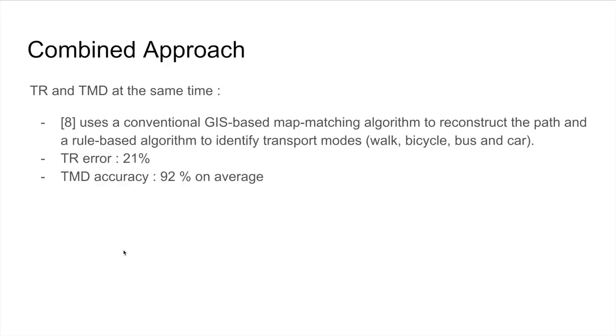Finally, we've seen in the literature one other approach that actually tried to tackle both problems as we are. They use a conventional GIS-based map matching algorithm to reconstruct the path and a rule-based algorithm to identify transport modes—walk, bicycle, bus, and car. They obtained a trip reconstruction error of 21% and a transport mode detection accuracy of 92% on average.